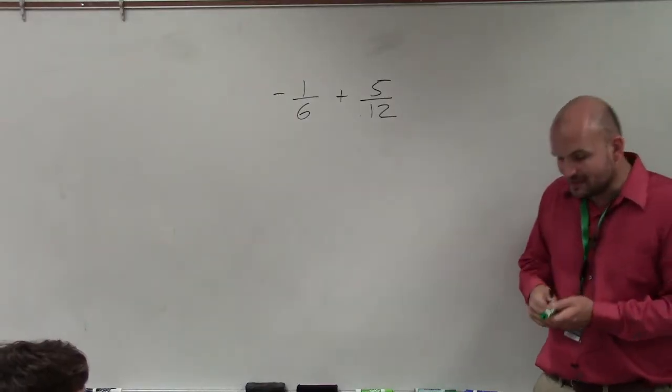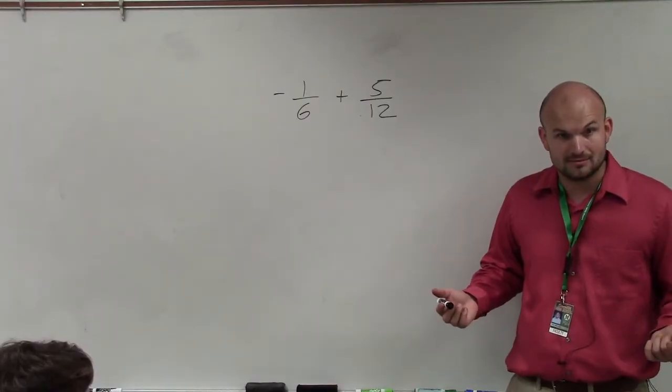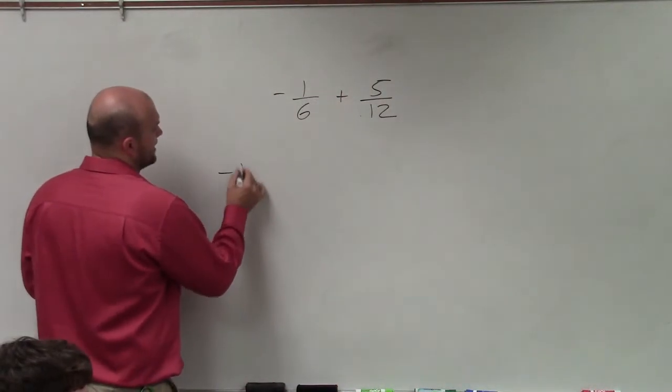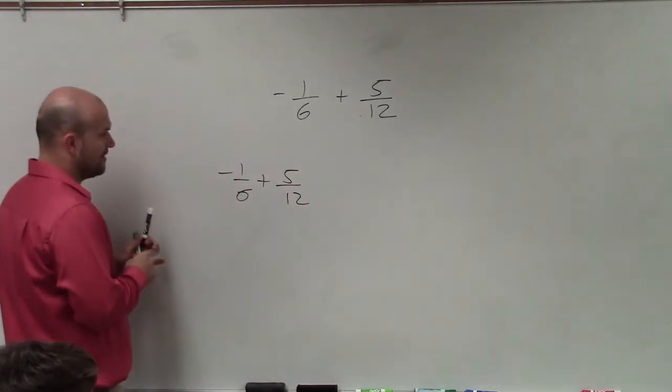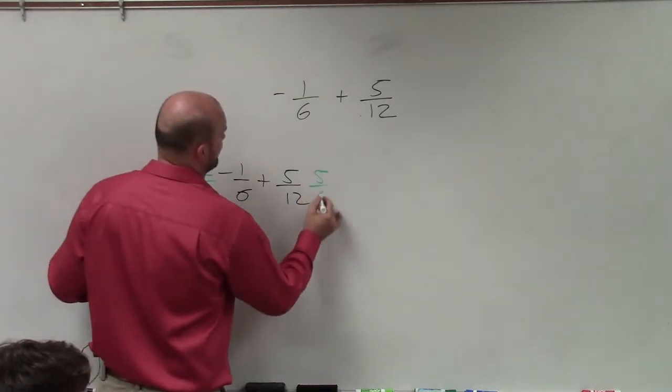So if you did that, you would say, all right, well, if I multiply these, that's going to be what? 72, correct? So therefore, I'd have to multiply negative 1/6 plus 5/12. Therefore, I would have to multiply by 12 over 12 and 6 over 6.